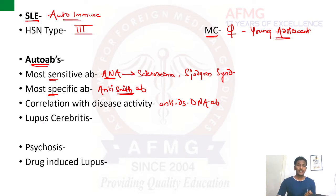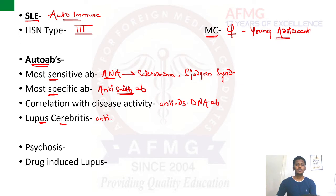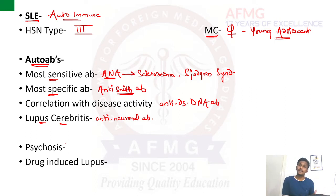Lupus cerebritis refers to the CNS manifestations of SLE — the patient can present with cerebral edema, headache, and seizures. This condition is due to anti-neuronal antibody, which attacks neurons in the central nervous system. Please remember: lupus cerebritis is a late CNS manifestation, whereas the earliest CNS manifestation would be cognition defects.